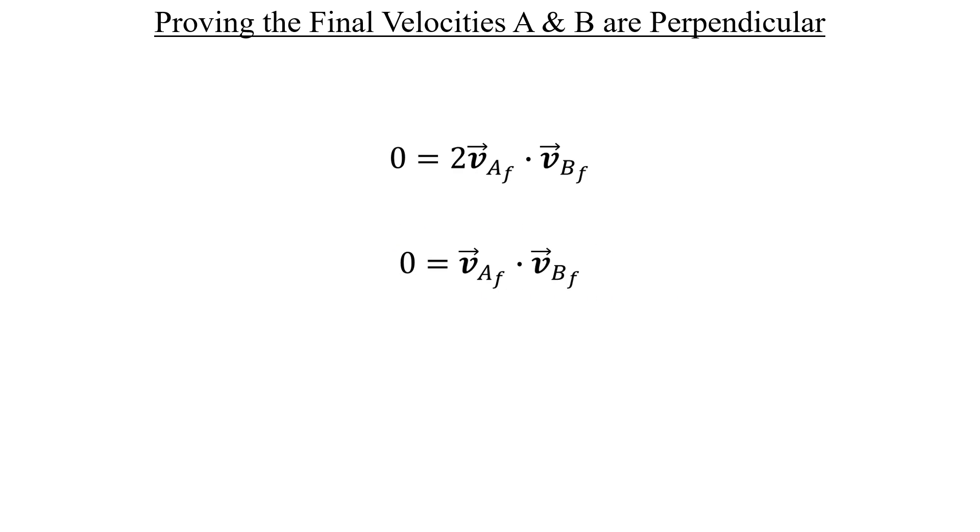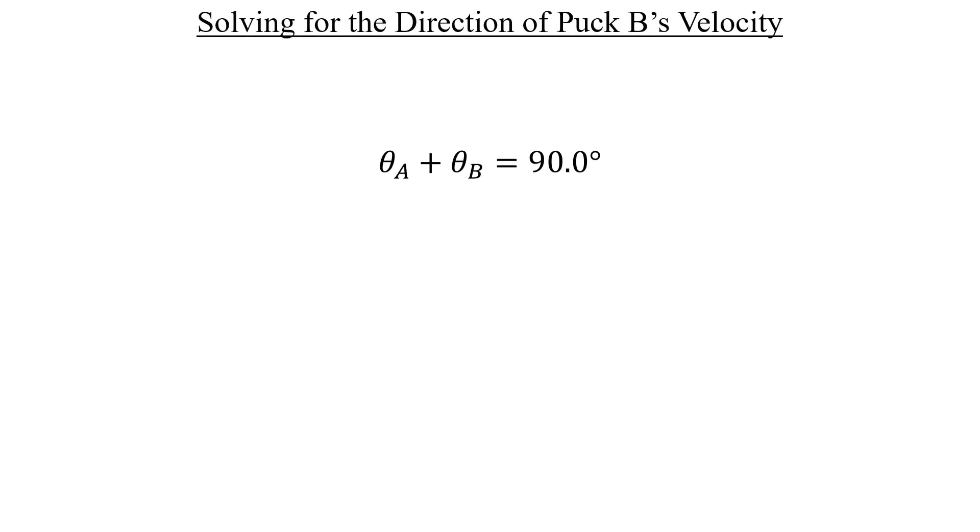For two non-zero vectors, their dot product can only equal zero if they are separated by 90 degrees. Therefore, angle A and angle B have to add up to 90. We were already given angle A, so if we take this expression and subtract that angle on both sides and plug in its value, now we know what angle B is. It's 65 degrees. And there's our answer for the direction of B's velocity.